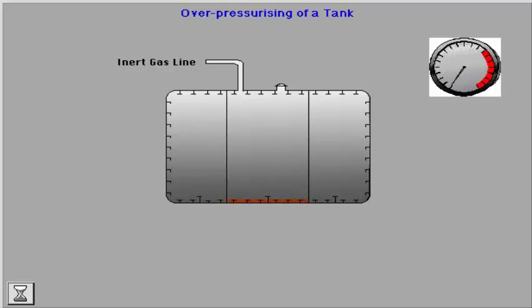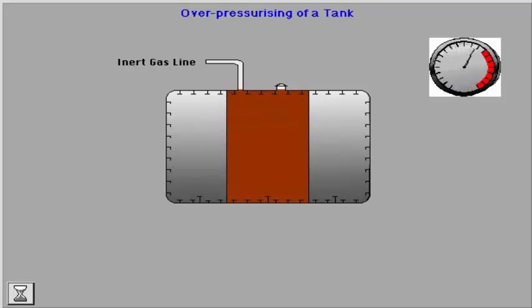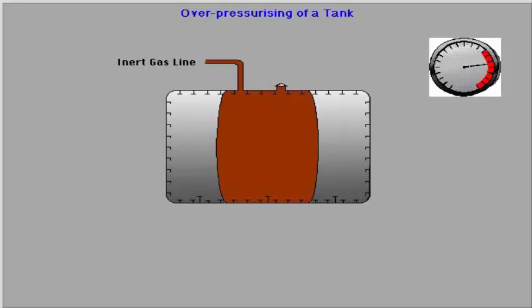Overpressurising of a tank will lead to excessive pressure inside the tank. This may happen if the loading rate is too fast or the pressure becomes too high. When the pressure on the tank becomes too high and the stress on the structure rises, this will eventually lead to buckling of the structure in the tank, such as the tank top and bulkhead.